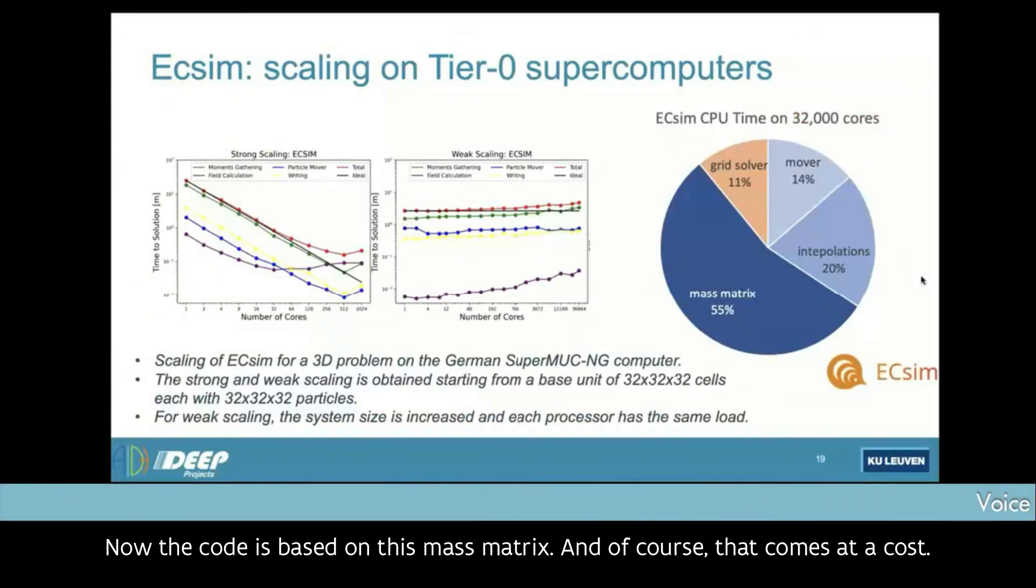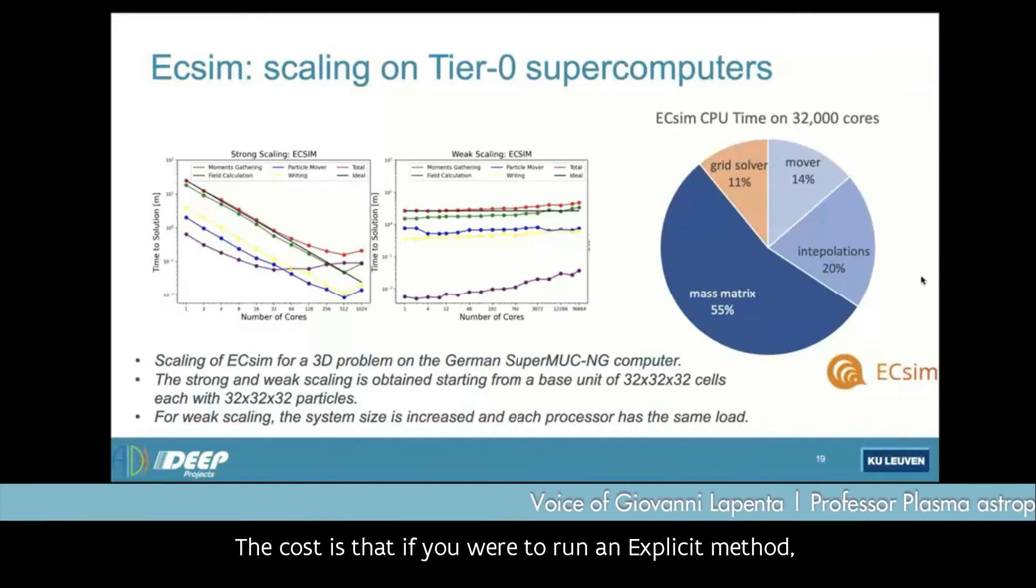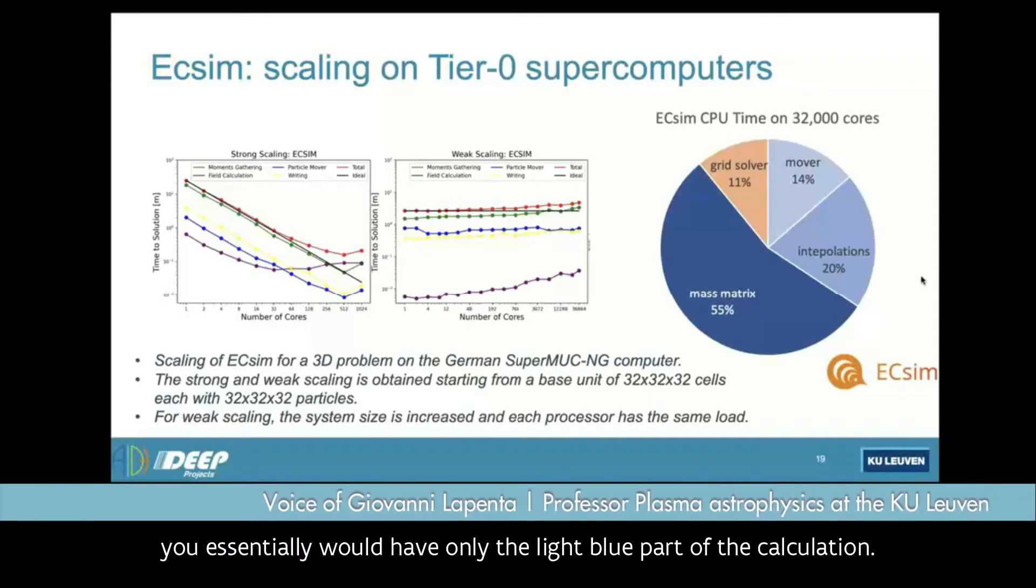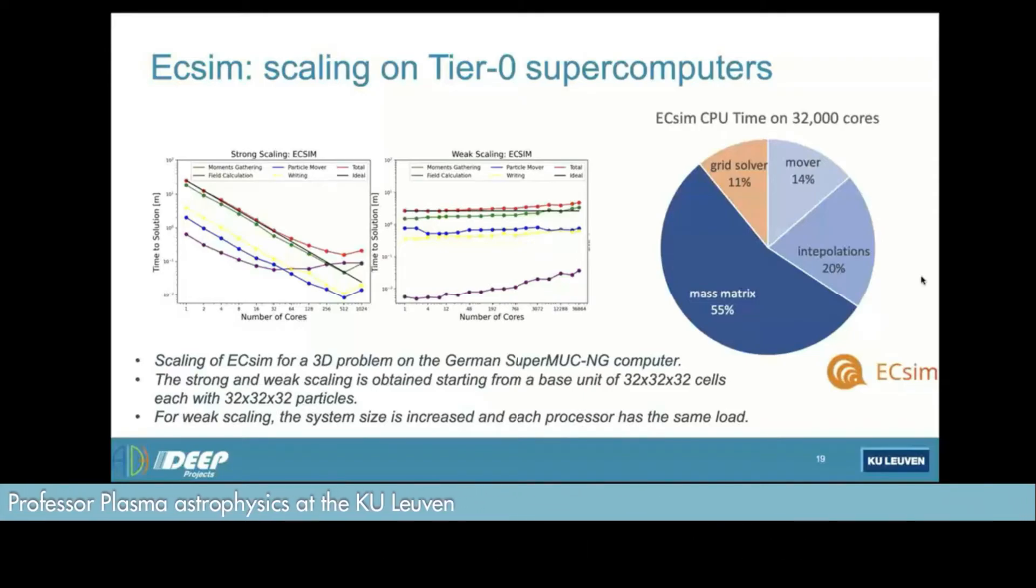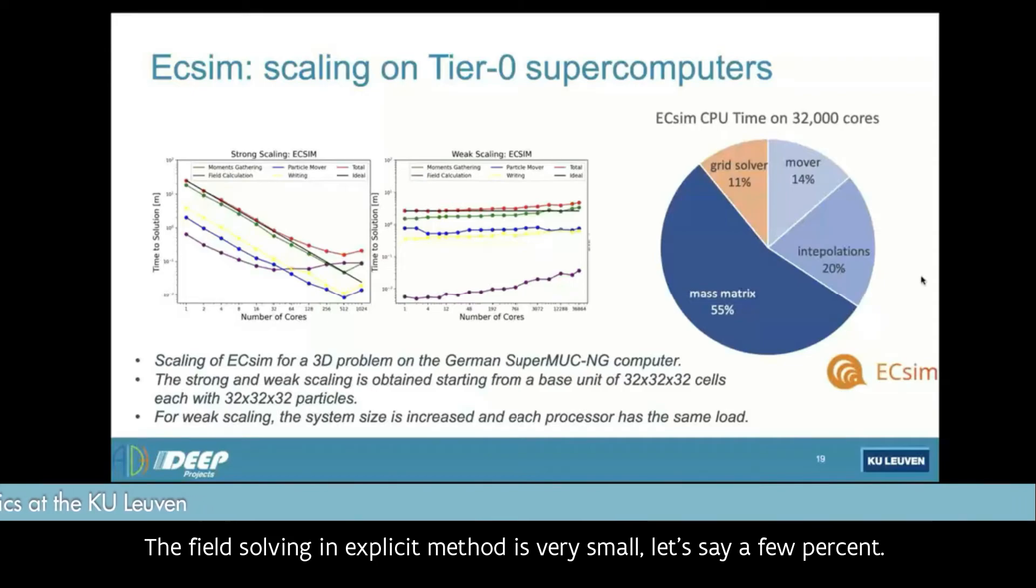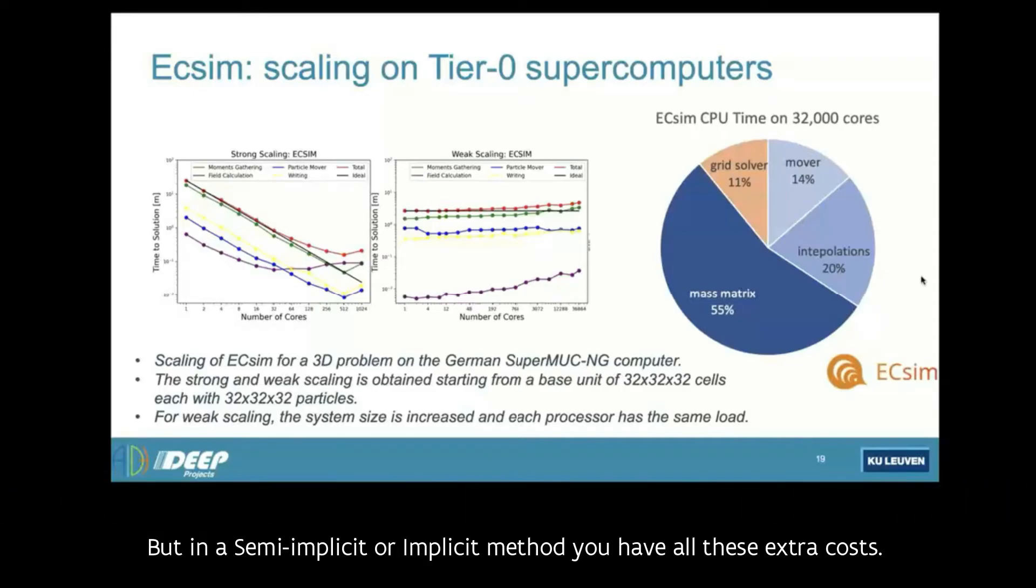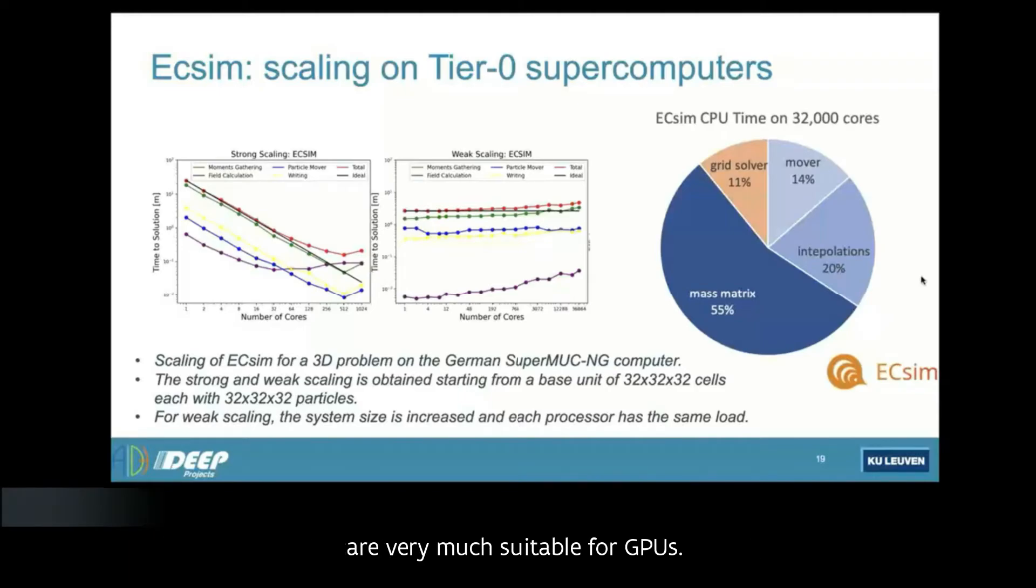Now, the code is based on this mass matrix, and of course that comes at a cost. The cost is that if you were to run an explicit method, you essentially would have only the light blue part of the calculation. You will have the mover. The field solver in explicit method is very small, let's say a few percent, but in a semi-implicit or implicit method, you have all these extra costs. The interpolations, the grid solution, which requires a linear solver, and most importantly, the calculation of this famous mass matrix, which takes more than half of the time. But this is an opportunity.